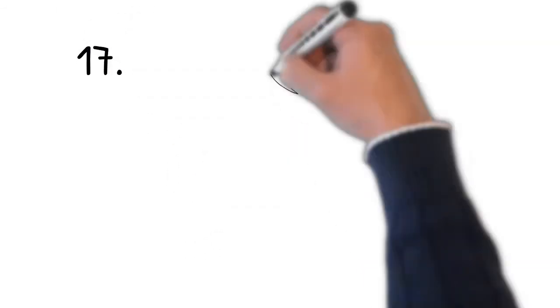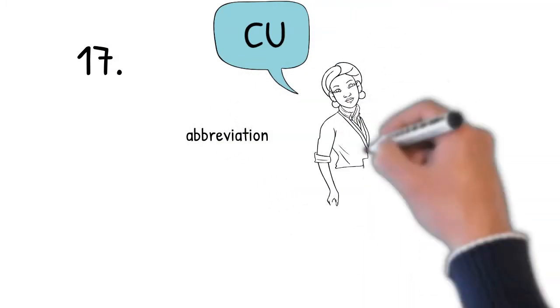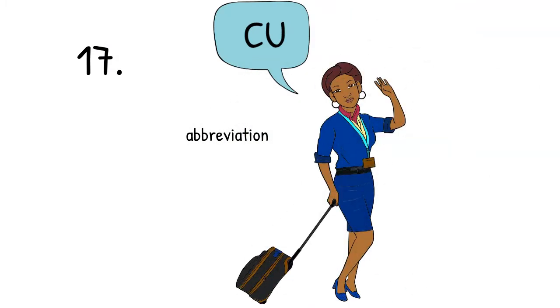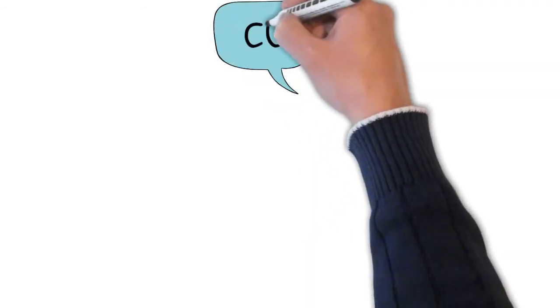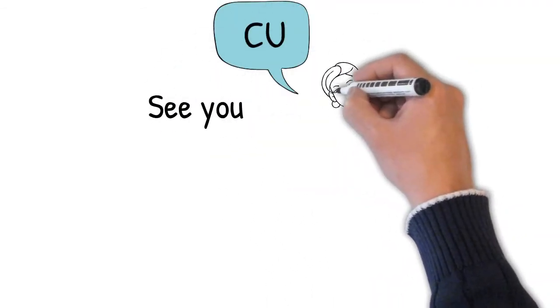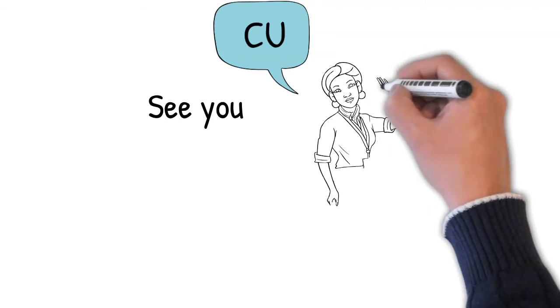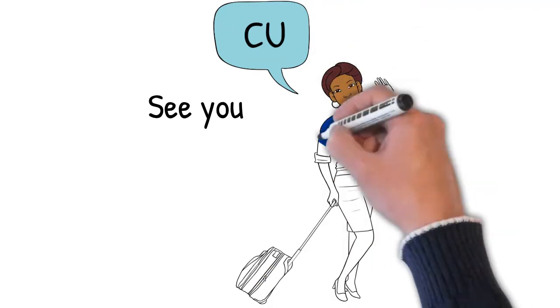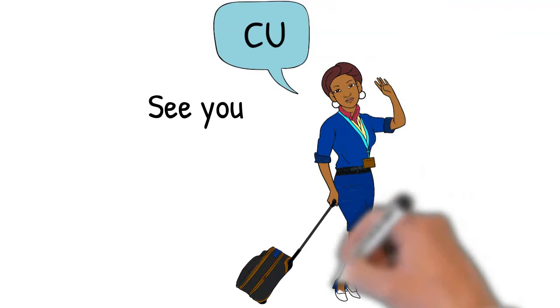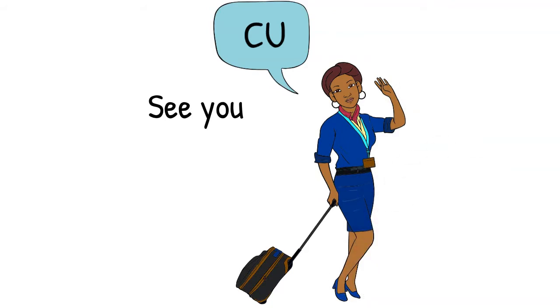Text number seventeen, see you. What do you think see you is an abbreviation for? This one's easy. See you. Well, the letters C U happen to sound just the same as see you, see you later. Sometimes in English we will say see ya instead of see you, but same thing.